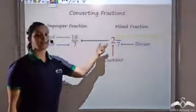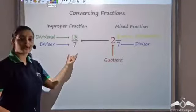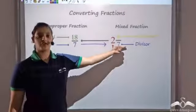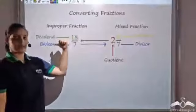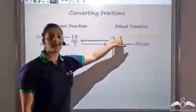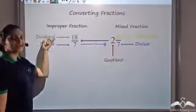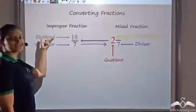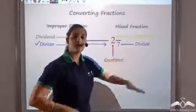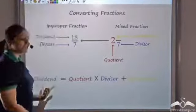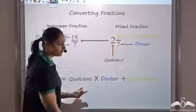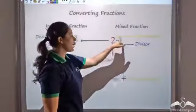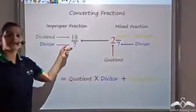Looking at this through division: if I know the quotient, remainder, and divisor, how do I get back to the dividend? Remember, dividend equals quotient times divisor plus remainder. So seven times two is fourteen, add four, that's eighteen. Eighteen by seven gives me back the improper fraction.